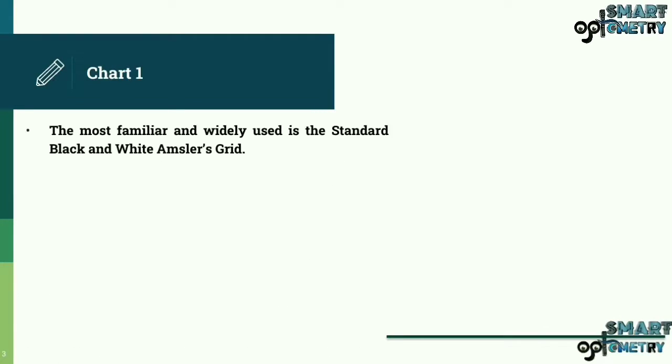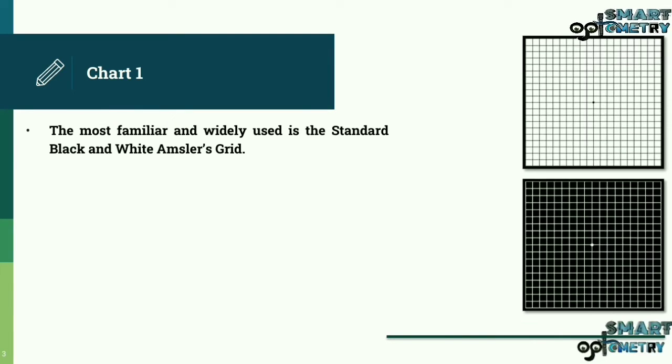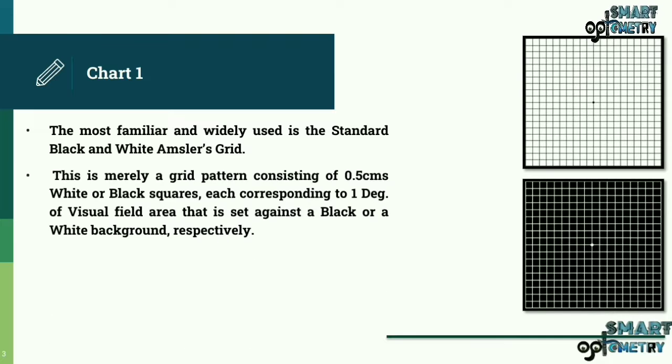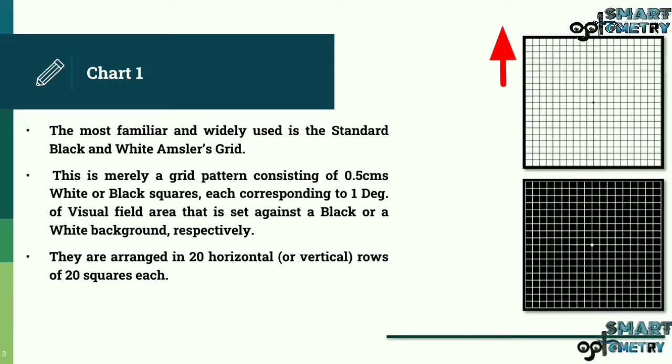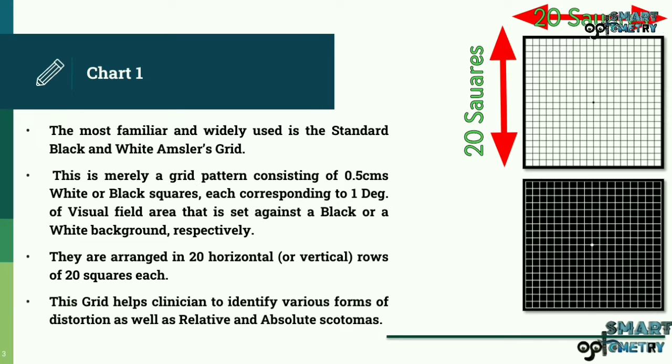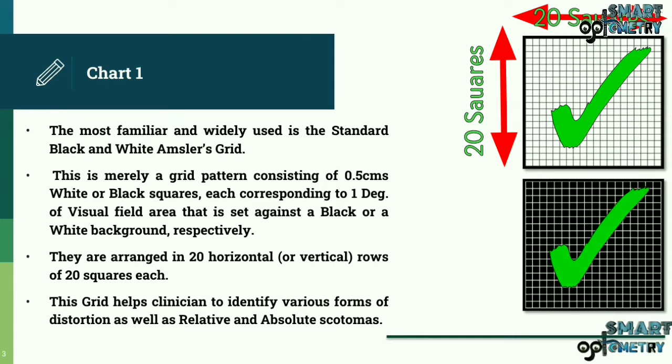Let's look at Chart 1. The most familiar and widely used is the standard black and white Amsler's grid. This is merely a grid pattern consisting of 0.5 cm white or black squares, each corresponding to one degree of visual field area that is set against a black or white background respectively. They are arranged in 20 horizontal or vertical rows of 20 squares each. This grid helps clinicians to identify various forms of distortion as well as relative and absolute scotomas. Here you can see the white Amsler's grid with black lines on it and a black Amsler's grid with white lines on it.